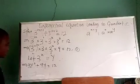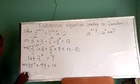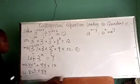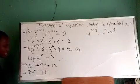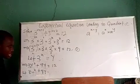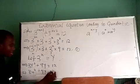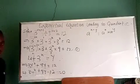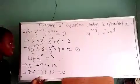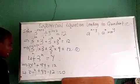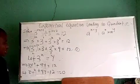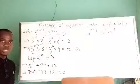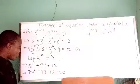We now have 3y² + 9y. Bringing 12 to the left hand side changes the sign, giving us 3y² + 9y − 12 = 0. We can see that this equation has now turned into a quadratic equation in terms of y, which means our variable has changed from x to y.